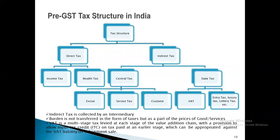The pre-GST tax structure in India: before GST was introduced, there were two types of taxes — direct taxes and indirect taxes. Direct taxes included income tax and wealth tax. Indirect taxes were divided into central taxes (excise duty, custom duty, service tax) and state taxes (VAT, entry tax, luxury tax, property tax, etc.). With the introduction of GST, these were all subsumed into CGST, SGST, or IGST, reducing the overall tax burden.